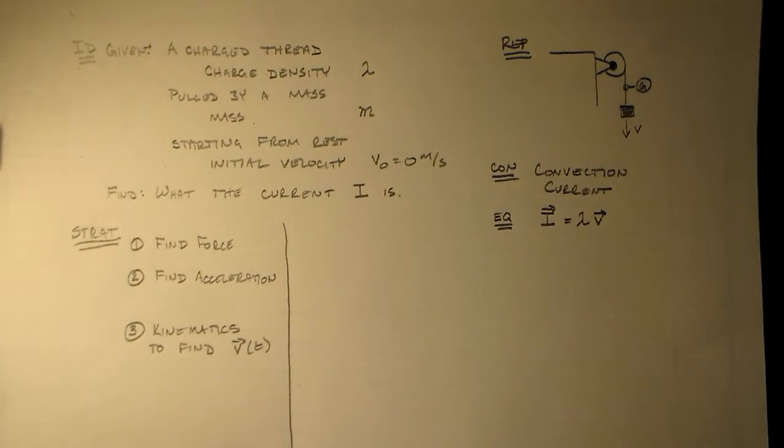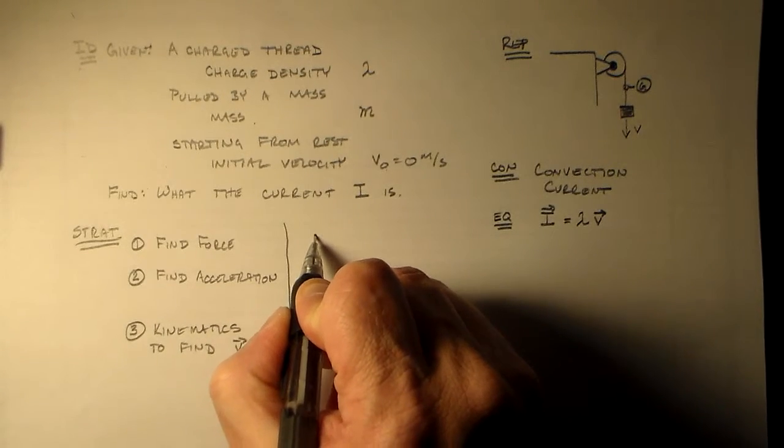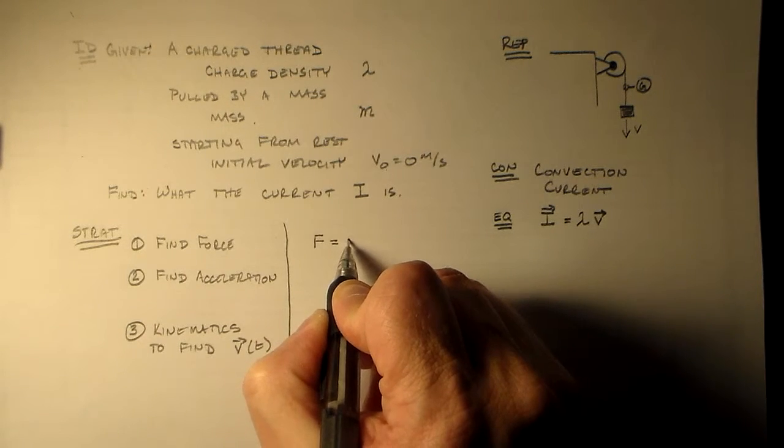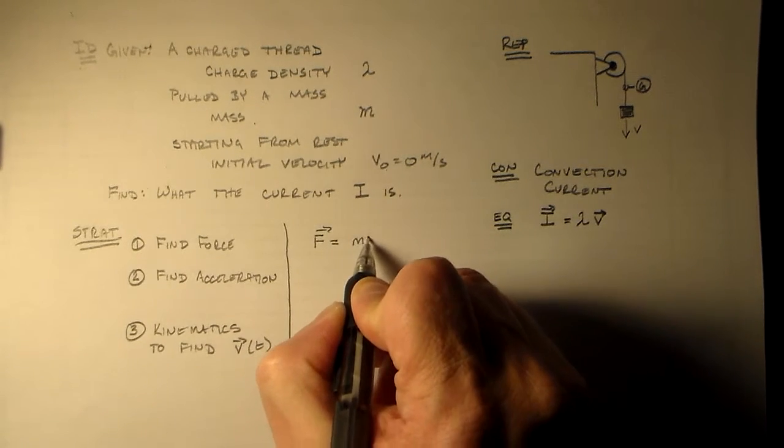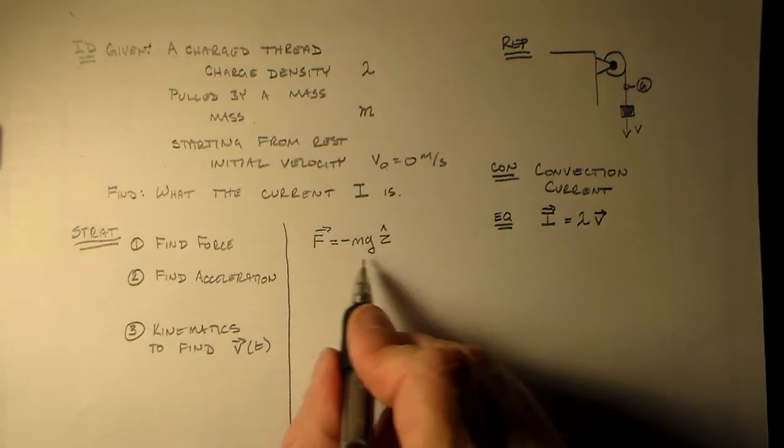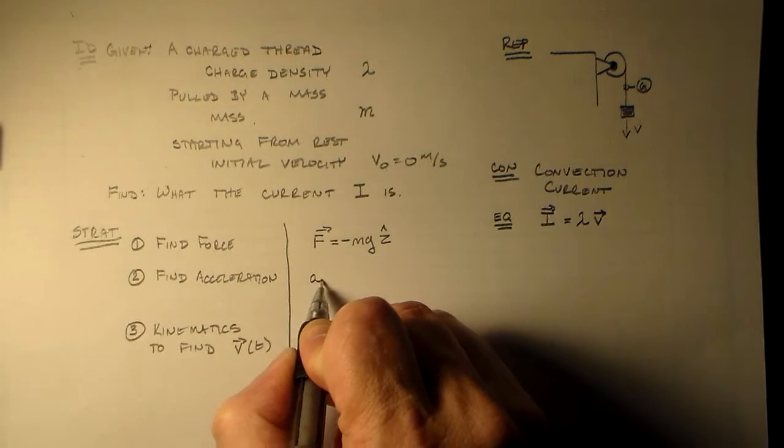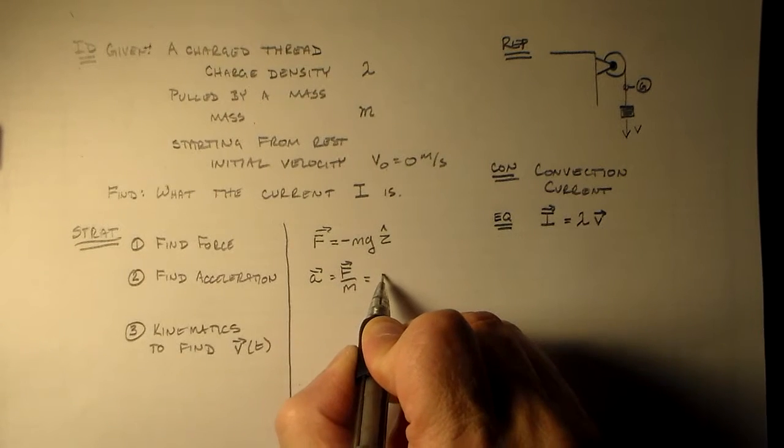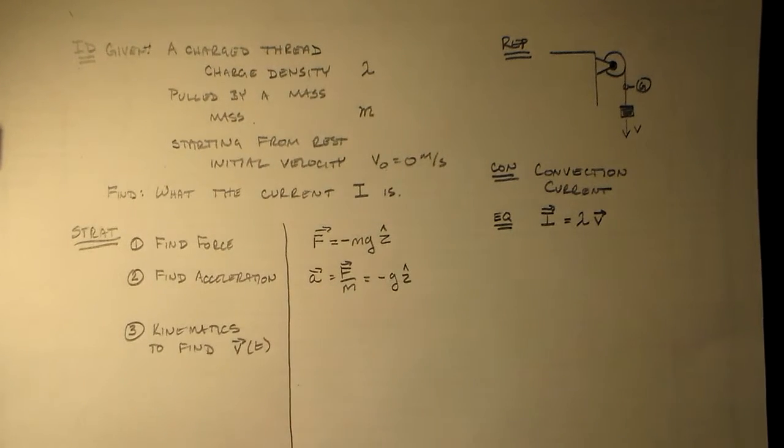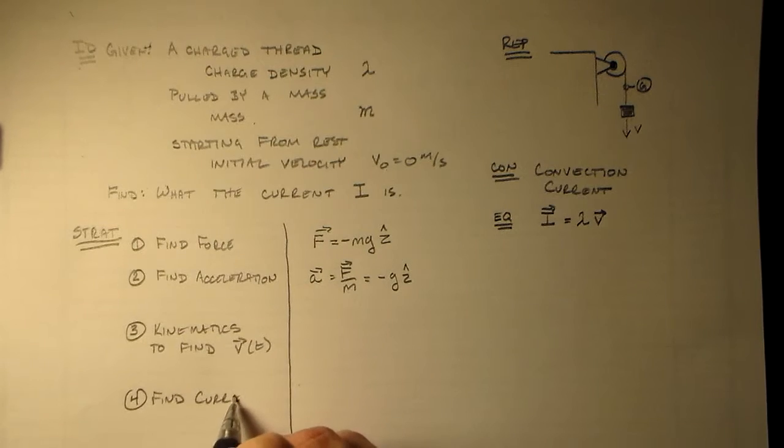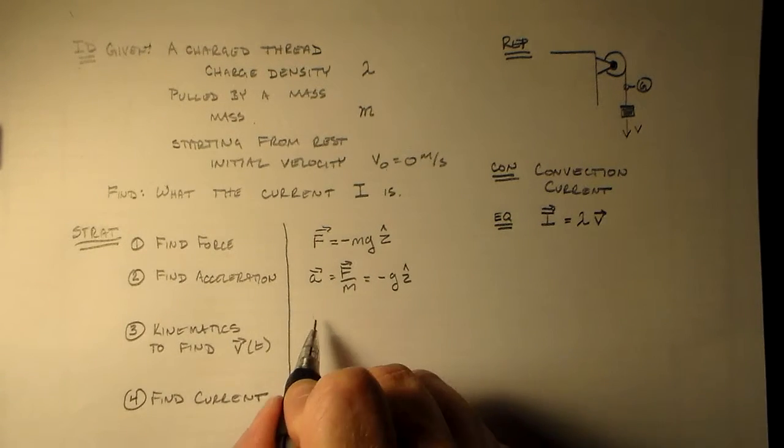So what is the force? Well, the force here is just the weight, which is minus mg in the z-direction, or mg in the minus z-hat direction. So our acceleration, which is f over m, is equal to minus g in the z-hat direction. Oops, find the current, excuse me, left that out.